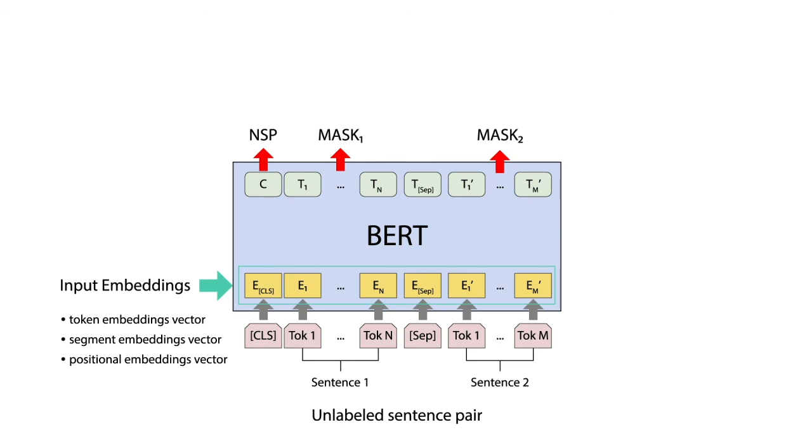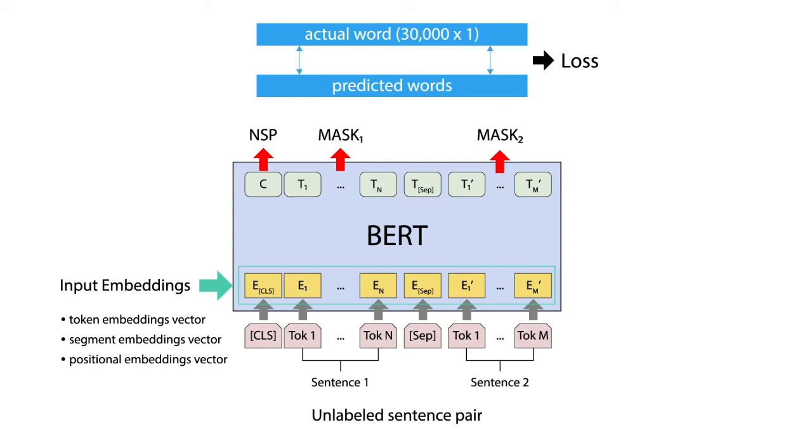On the output side, the word vectors T have the same size and are generated simultaneously. Assume that our vocabulary contains 30,000 words. The predicted masked words are compared with the actual words. The difference is reflected by our loss. The loss is only calculated for the masked words in order to focus on these words.